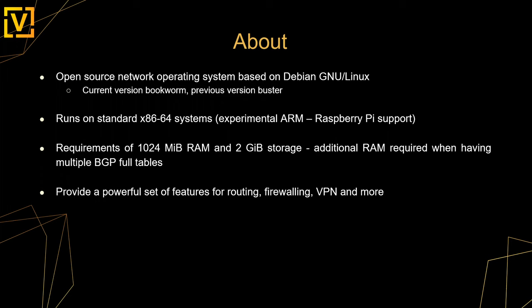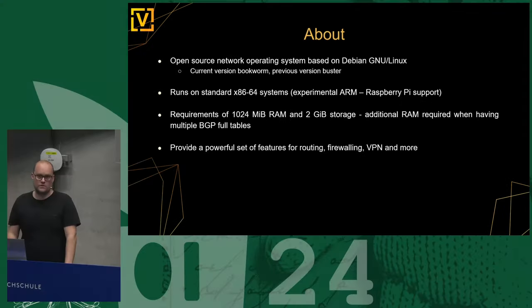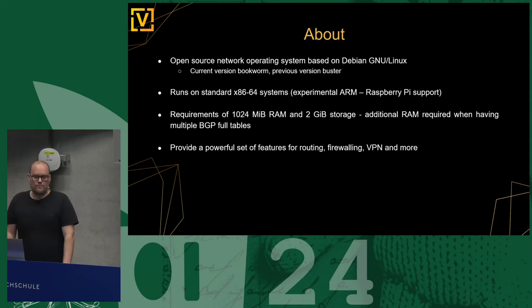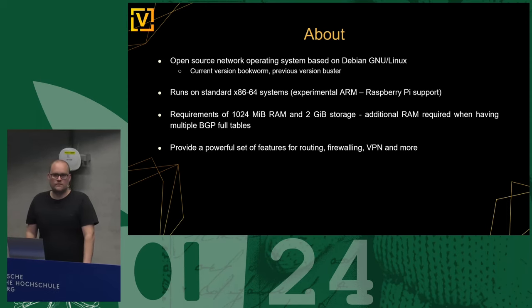VyOS is an open source network operating system based on Debian. The current LTS version runs on Debian Bookworm; the previous LTS version runs on Debian Buster. We run on standard x86 systems, with experimental ARM support, maybe for Raspberry Pi. Minimum hardware requirements are 1 GB of RAM and 2 GB of storage. It's an image-based system so you upgrade from one version to the next and the configuration is copied. We provide routing, firewalling, VPN services, and containerized applications.